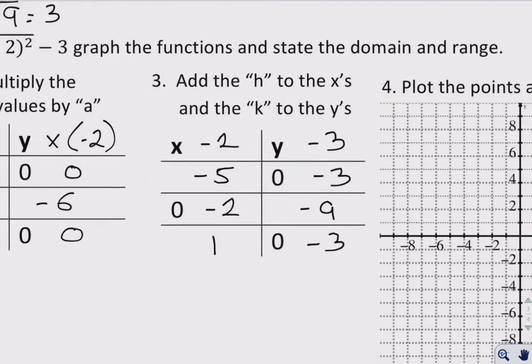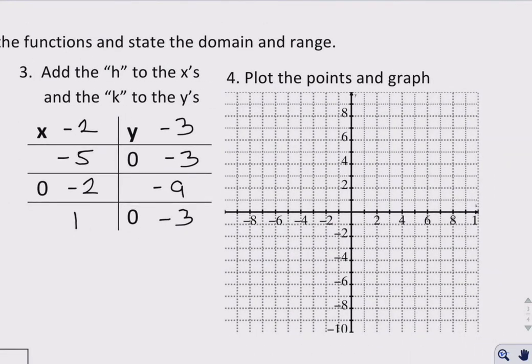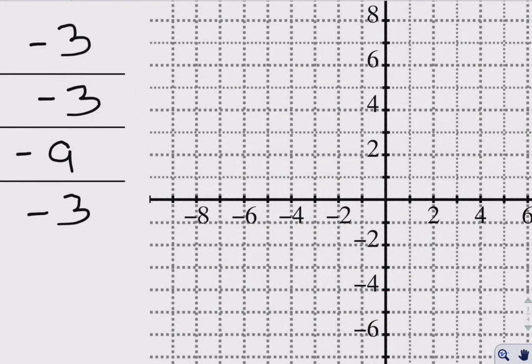So what does that look like? Moving over to our graph, negative 5 and negative 3 is going to be somewhere, well, exactly right here.